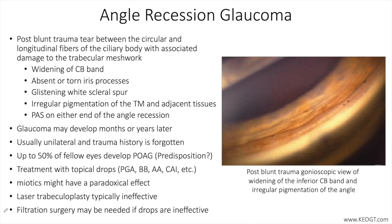If the contralateral eye was free of trauma, the anatomy of both eyes can be compared to identify subtle differences and enhance diagnostic capabilities. Angle findings include widening of the ciliary body band, which results from a tear between the longitudinal and circular muscles of the ciliary body. Iris processes may be torn or absent, and the scleral spur may appear more distinctly white compared to the opposite eye, described as "glistening."